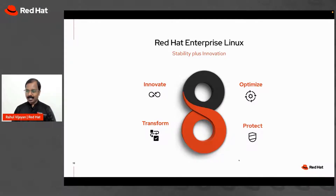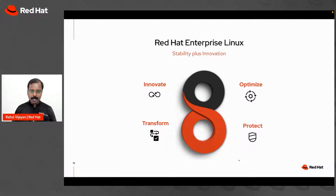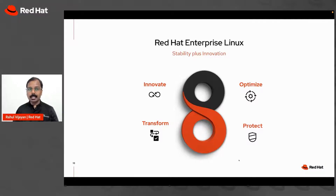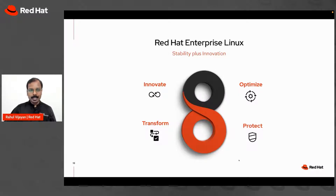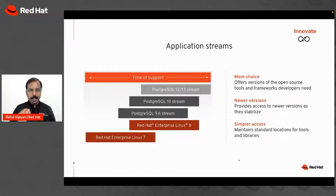Let's talk about Red Hat Enterprise Linux. The number 8 on the slide represents the RHEL 8 version, which was released back in May 2019. Today we are at RHEL 8.5, and in 2022 we plan to release RHEL 9. RHEL 8 is based on four key themes: innovation, transformation, optimization, and protection.